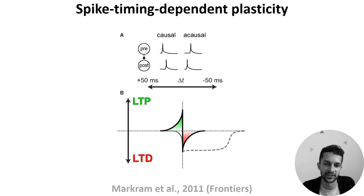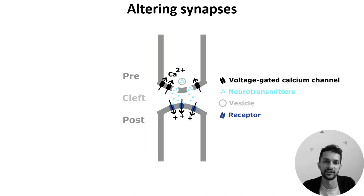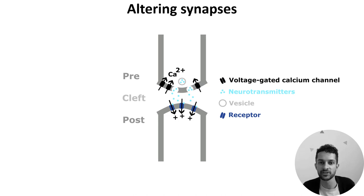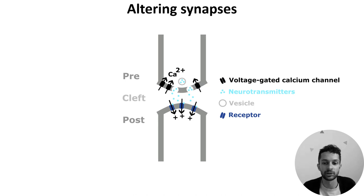So what actually changes at the synapse to produce this change in weight? If we think about the structure of the synapse, there are many possibilities for changing the connection strength: increasing the number of synaptic vesicles or the density of neurotransmitters within them, increasing the number of postsynaptic receptors, increasing the surface area of the synapse, or even adding an additional synapse between the two neurons.